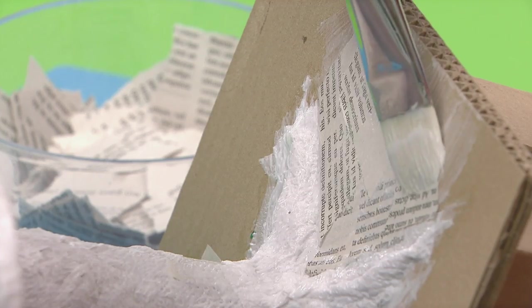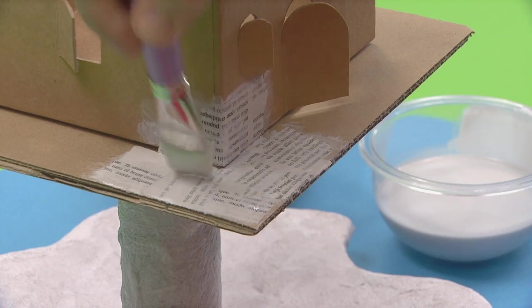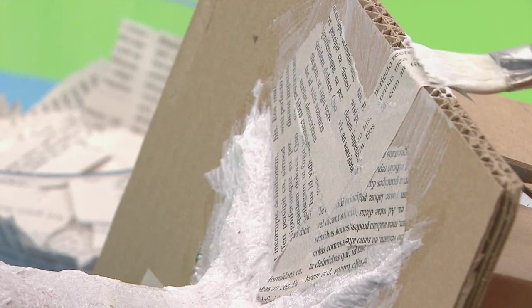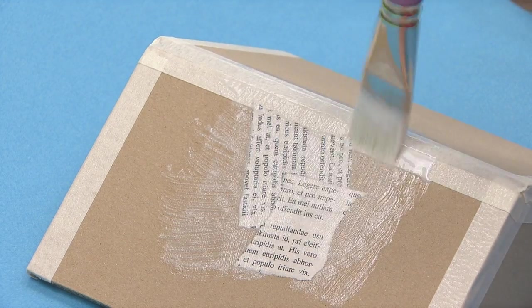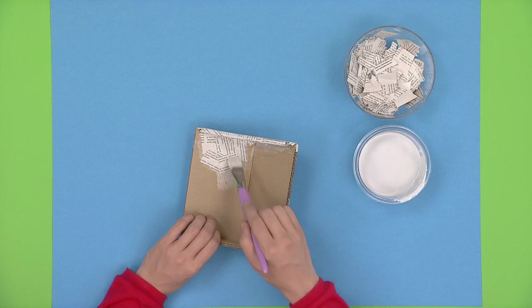Add some newspaper strips to the platform. Glue everywhere from bottom to top. Cover both the inside and outside of the roof. The roof needs to be sturdy, so cover it as much as you want.